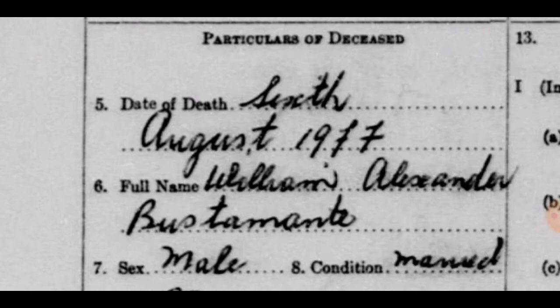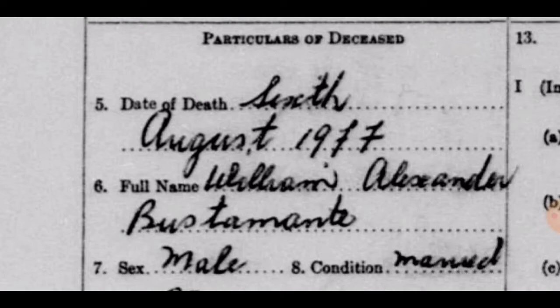Full name: William Alexander Bustamante. For many persons, we just call him Alexander Bustamante. But the full name is William Alexander Bustamante. This was not his name at birth. When he was born in 1884, his name was William Alexander Clark. His mother was Mary Wilson and his father was Robert Constantine Clark. It was in 1884 — actually in 1944 — that he officially changed his name to Bustamante.